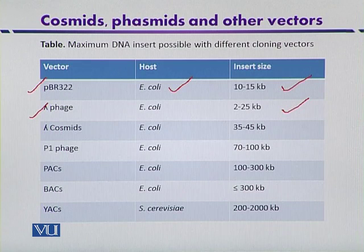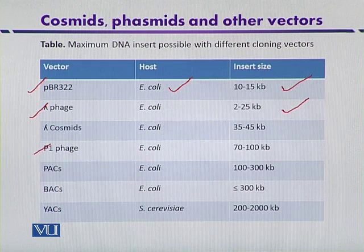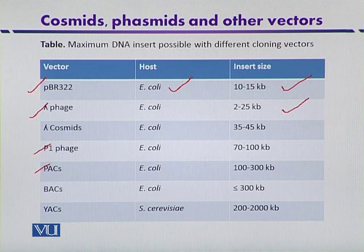Next are the lambda cosmids, which can clone up to 45 or sometimes 52 kilobase DNA fragments. Then another type of phage vector — the P1 phage — which can clone 70 to 100 kilobase DNA fragments.